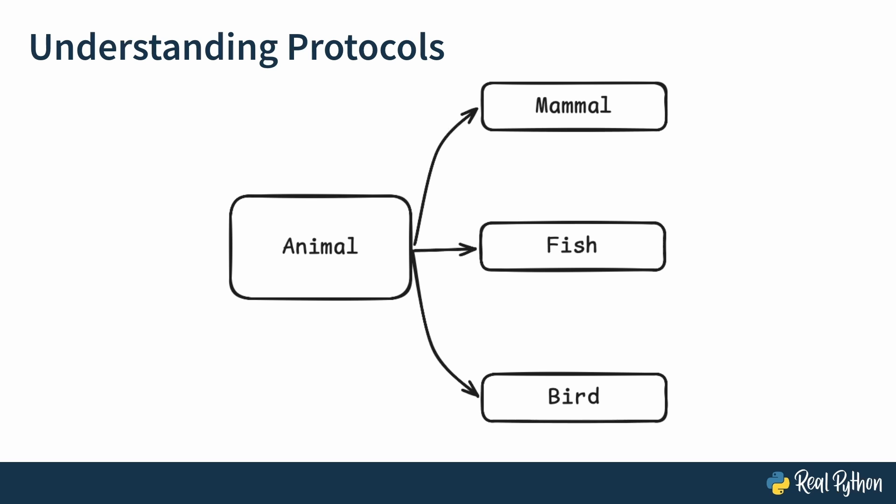And then you might think of creating child classes for mammals and fish and birds and others. And you take this idea from biology, because biology does this. You can classify animals as mammals, fish, birds, etc. So you think this is a good idea.